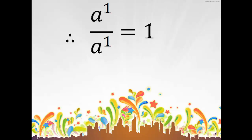What's the next step? The step is: A raise to 1 divided by A raise to 1 is equal to 1. Now here, the number is divisible by the same number. So there is a rule which says that any number which is divisible by each other, we have to subtract the indexes.